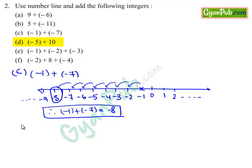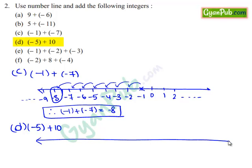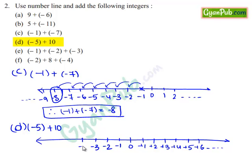Similarly, take down part D: minus 5 plus 10. Here we are adding 10 to the integer minus 5. For this, we are using a number line. On this, 0 is the middle value. To the right of 0 are plus 1, plus 2, plus 3, plus 4, plus 5, plus 6 and so on. To the left of 0 are minus 1, minus 2, minus 3, minus 4, minus 5 and so on. First, we mark minus 5 on this number line by moving 5 steps to the left of 0. Here we mark minus 5.